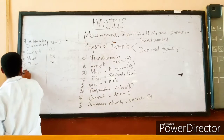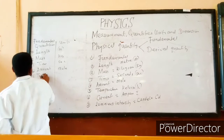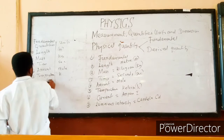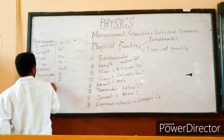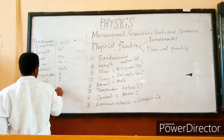The fourth fundamental quantity is amount, measured in moles. Next is temperature, measured in Kelvin, symbol K. We also have current, measured in ampere, symbol A. And finally, luminous intensity, measured in candela, symbol cd. This table summarizes all the fundamental quantities.